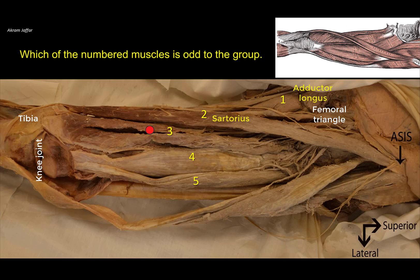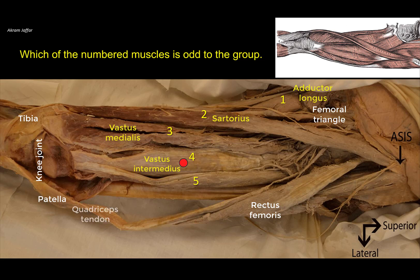We have the vastus medialis on the medial side, then the vastus intermedius — this is not the rectus femoris. The rectus femoris has been pushed away from the rest of the vastae. You can see the patella attached here to the tendon of the quadriceps muscle. So this is the vastus intermedius and then we have the vastus lateralis muscle. Three, four, and five are in common because they are members of the quadriceps femoris muscle. But where is the odd muscle in the group?